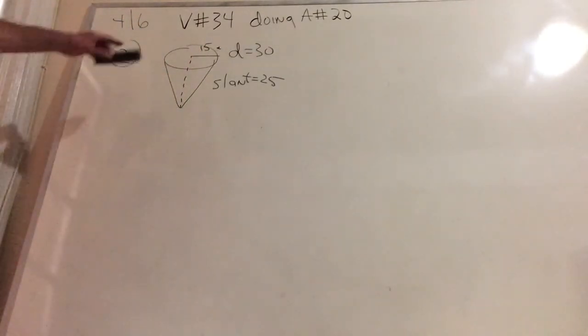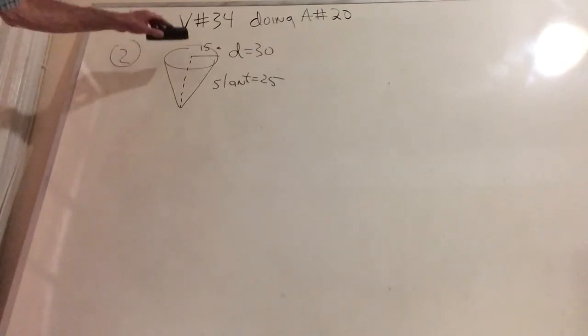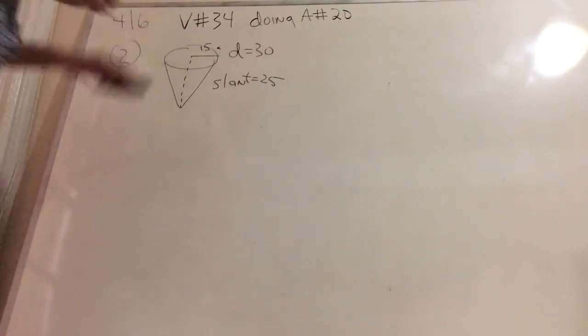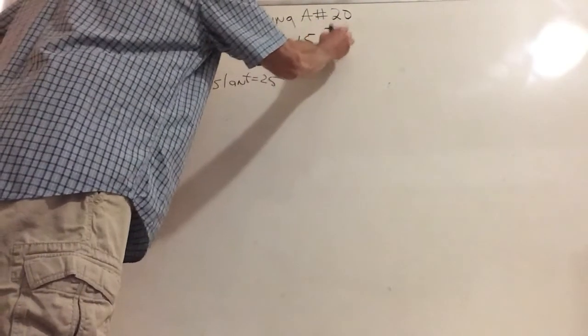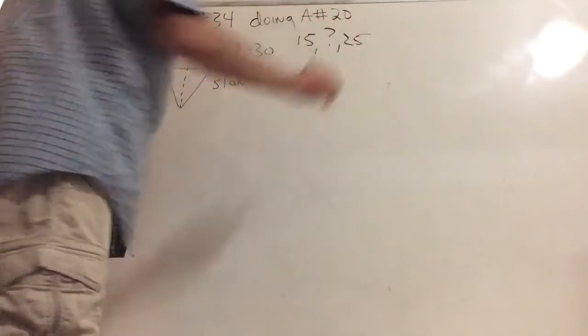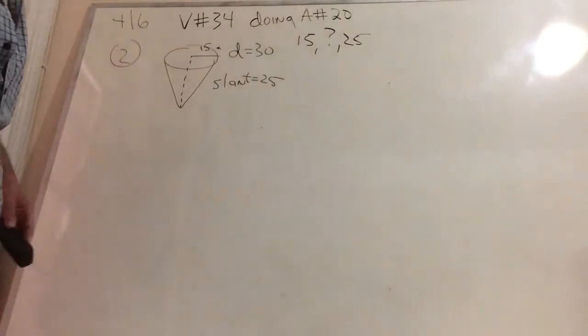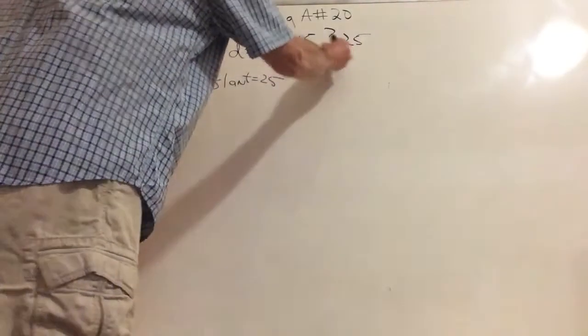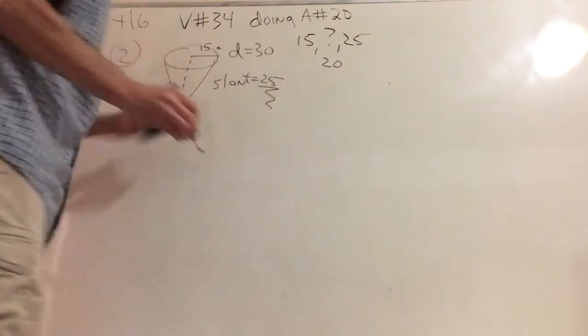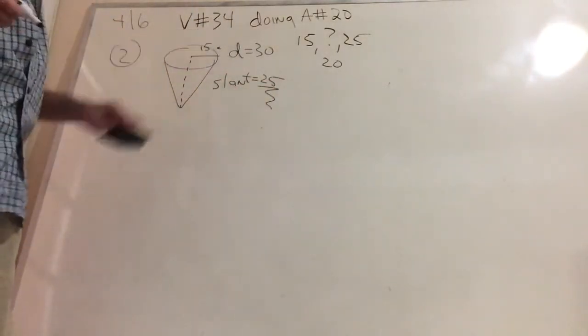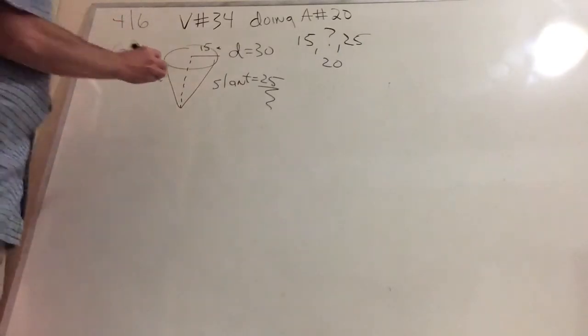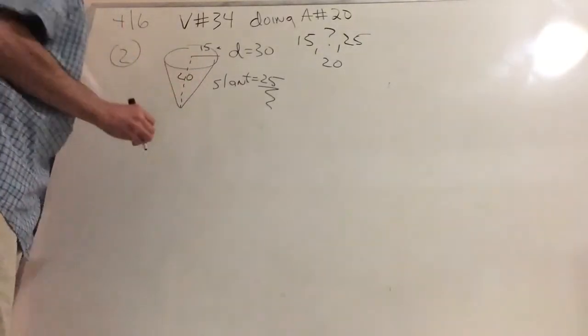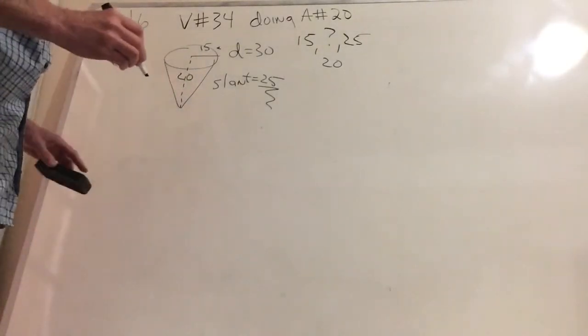So immediately I fill in the data. r equals 15. The slant equals 25. And I draw my perpendicular bisector. It's been explained many times. So here we go. It's 25, 15. There's the 15. Yet again, there's the missing number. There's the 25. This could be done on a calculator as well, and the missing number is 20.